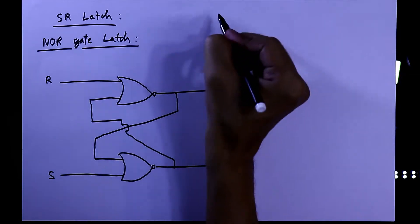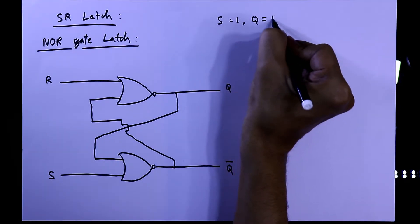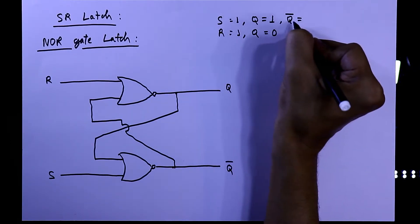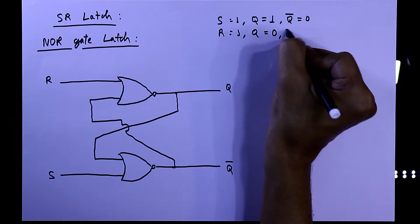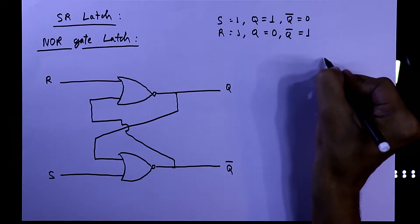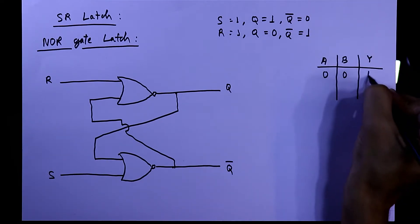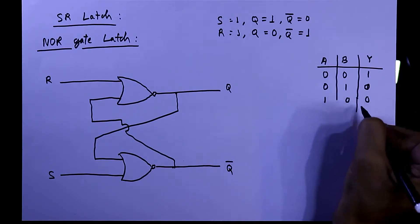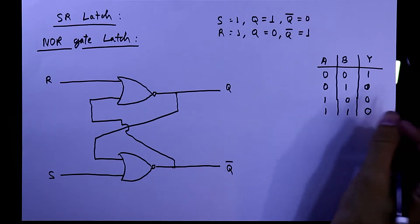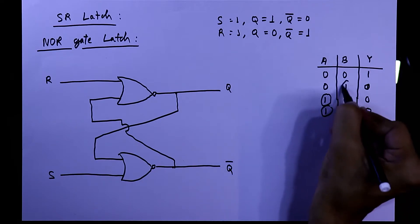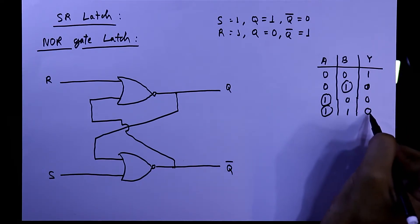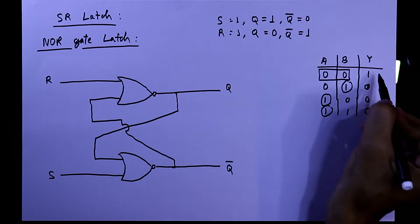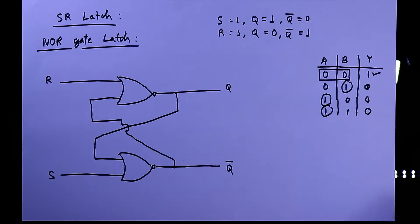When S=1, we should get Q=1. When R=1, Q should be 0 and Q-bar should be 1. The truth table of the NOR gate: if both inputs are 0, the output is 1; if any input is 1, the output is 0. We will use this information to analyze the circuit.